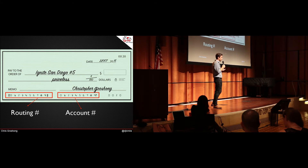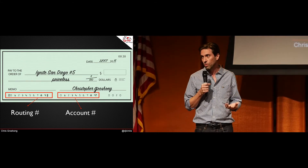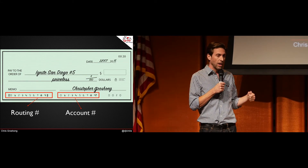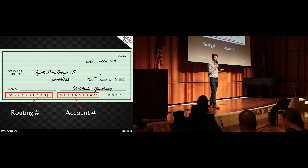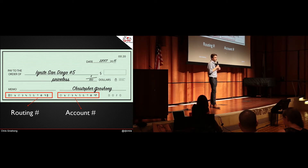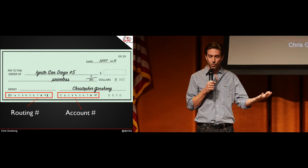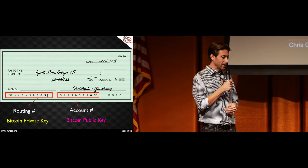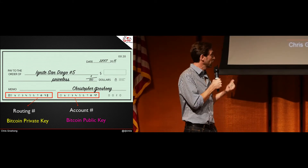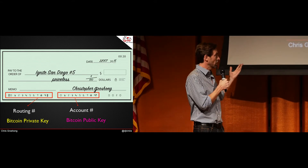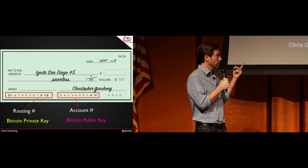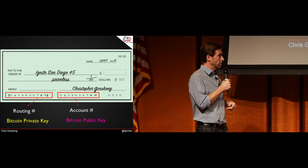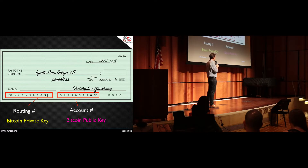The vehicle that we use to send money, whether digital or physical, is a check. There are two parts to that: a routing number, which is what we use to send money, and an account number, which is how we take deposits in. You can think of the routing number as a Bitcoin private key, and the account number as a Bitcoin public key, which is also known as the Bitcoin address.